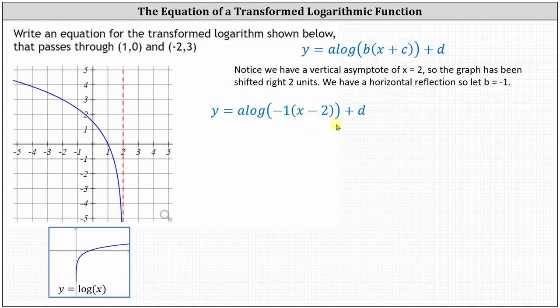Let's simplify inside the parentheses. If we distribute, we have negative x plus two, or two minus x. So the equation becomes y equals a times common log of the quantity two minus x, plus d.